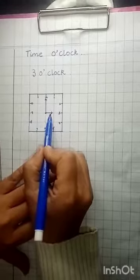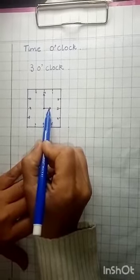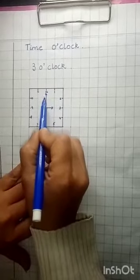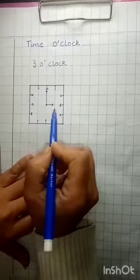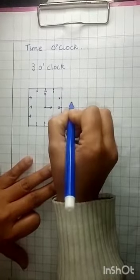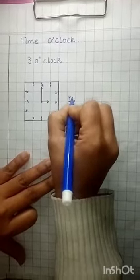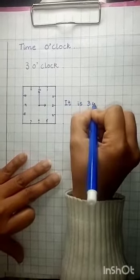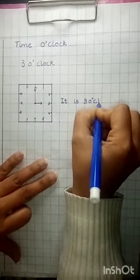The hour hand is small and it stays inside the block. And the minute hand is long and it goes out of the block. So here we will write, and it is 3 o'clock.